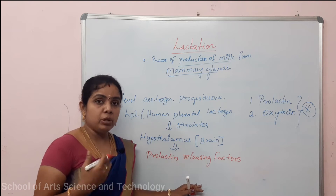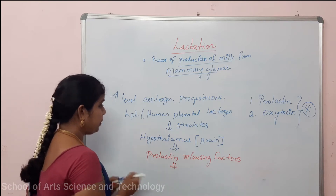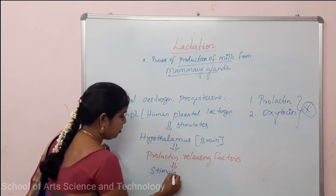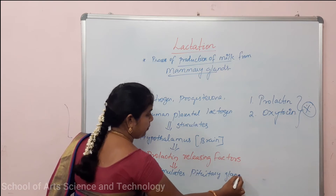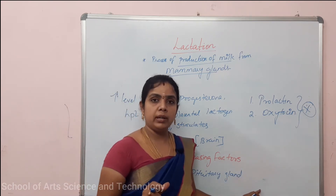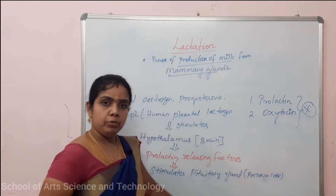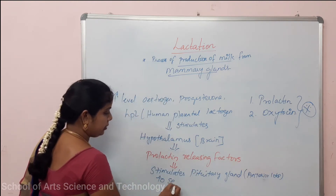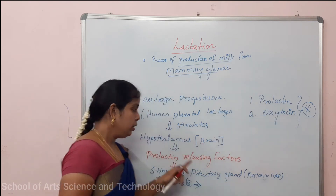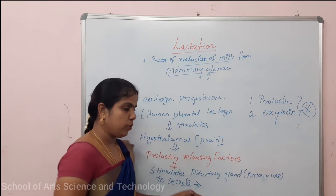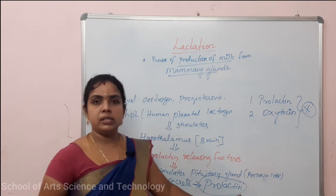The Prolactin Releasing Factors stimulate the pituitary gland. Specifically, the anterior lobe of the pituitary gland secretes the hormone called Prolactin. So Prolactin Releasing Factor causes the release of Prolactin, which is secreted during pregnancy.